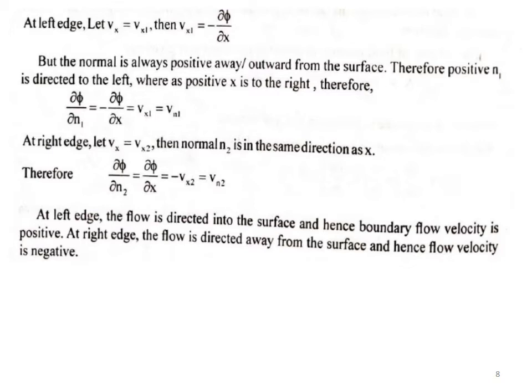At the right edge, let Vx = Vx2. Then normal n2 is in the same direction as x, so ∂φ/∂n2 = ∂φ/∂x = -Vx2 = Vn2. At the left edge, flow is directed into the surface, so the boundary flow velocity is positive. At the right edge, flow is directed away from the surface, so the flow velocity is negative. This completes the derivation of the differential equations for fluid flow.